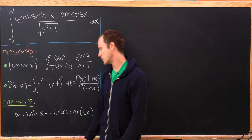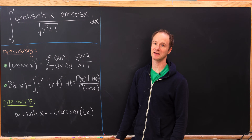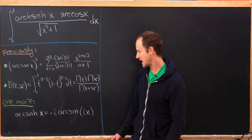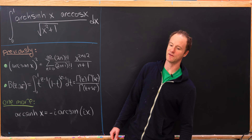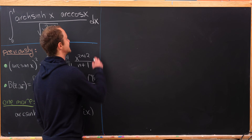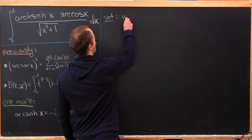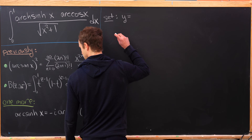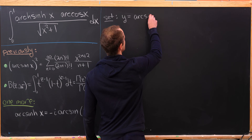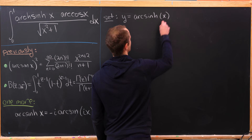We'll start by showing that the inverse hyperbolic sine is equal to minus i times the inverse sine evaluated at ix. So let's set y equal to the arc hyperbolic sine of x — in other words, the inverse hyperbolic sine.